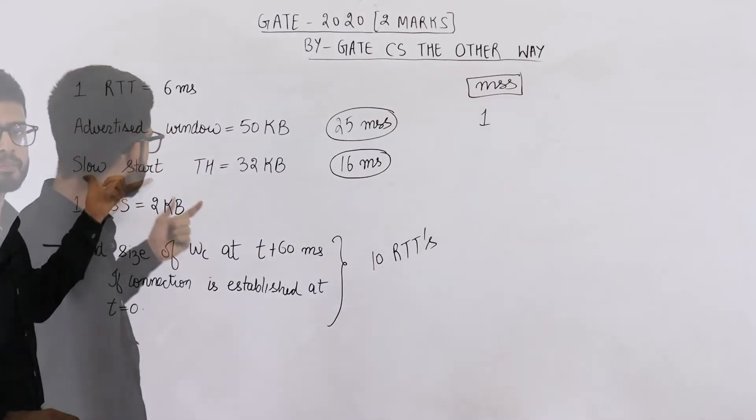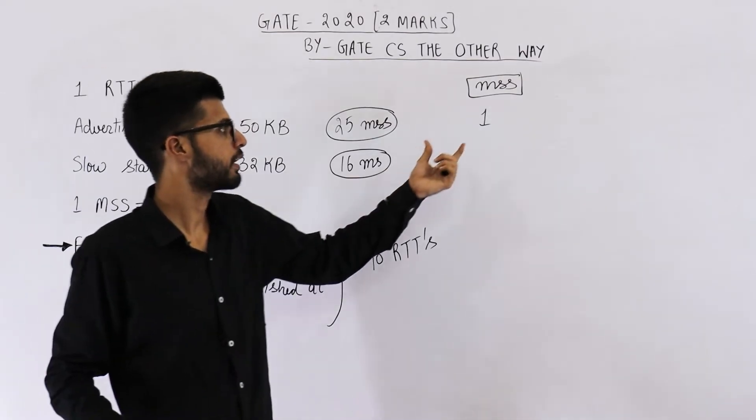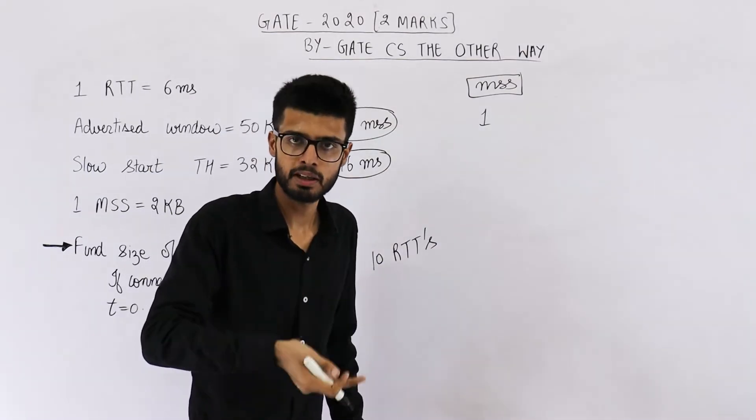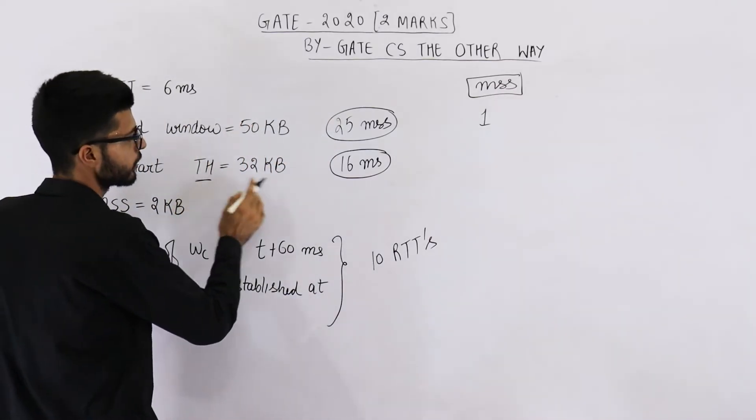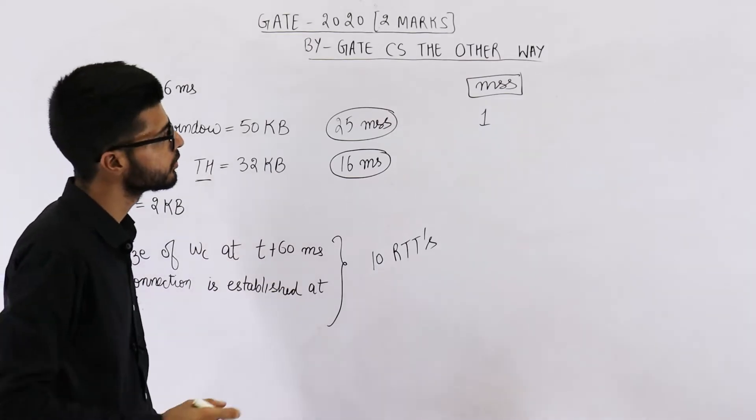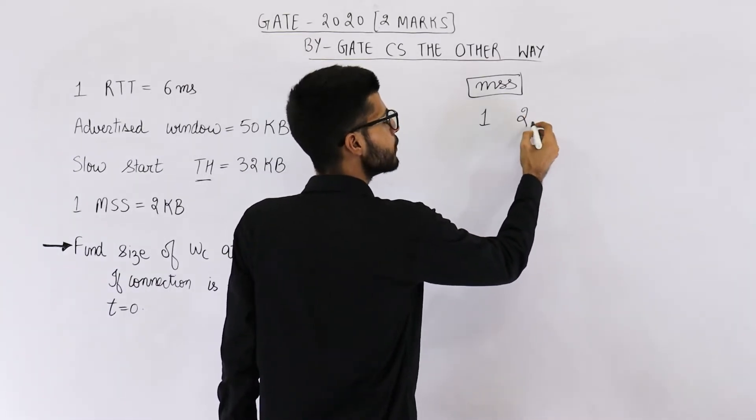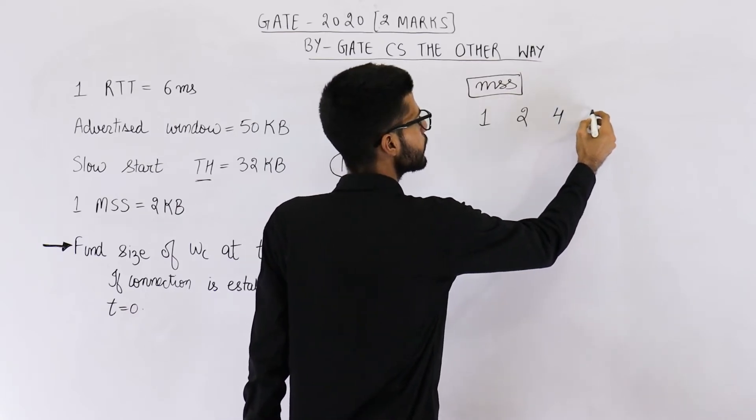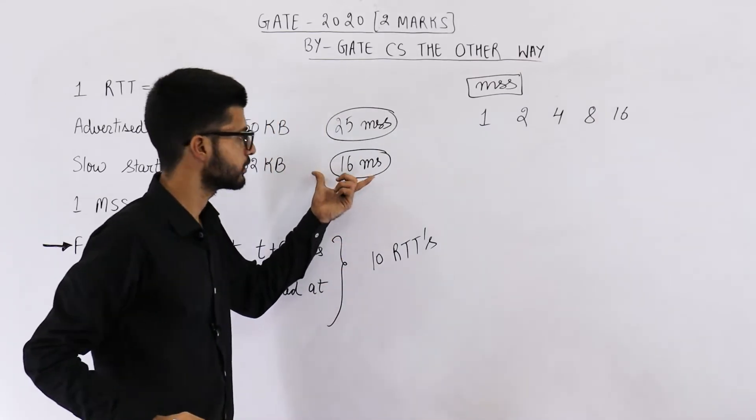In starting, that means initially in slow start phase, you will begin from 1 MSS. Keep on doubling this size after every RTT until you reach this threshold. So just keep on doubling this size. In next RTT, it will be 2, then it will be 4, then 8, then 16.